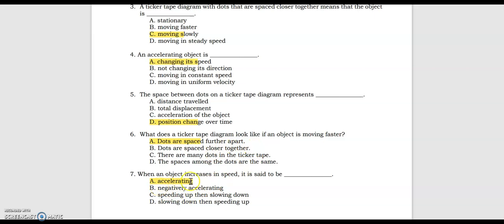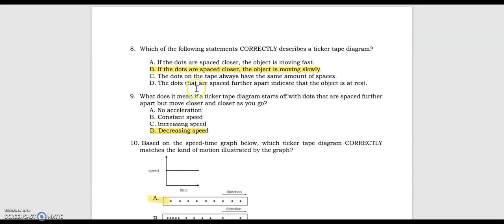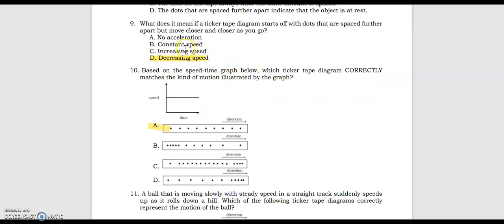Number 7, when an object increases in speed, it is said to be accelerating. Number 8, which statement correctly describes a ticker tape diagram? The answer is: if the dots are spaced closer, the object is moving slowly. Number 9, what does it mean if a ticker tape diagram starts with dots spaced farther apart but moves closer and closer as you go? That means the object is decreasing in speed. Number 10, based on the speed-time graph below, which ticker tape diagram correctly matches the motion illustrated? The speed should be constant, so the answer is letter A.